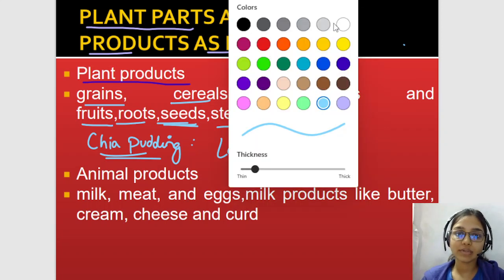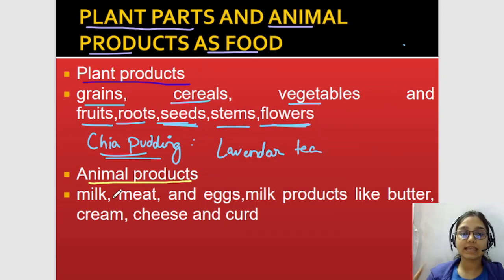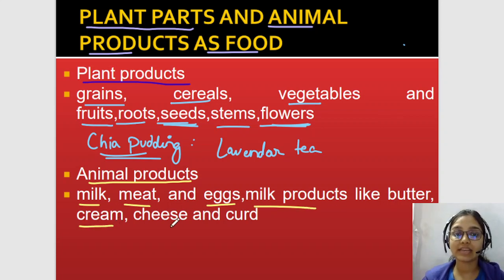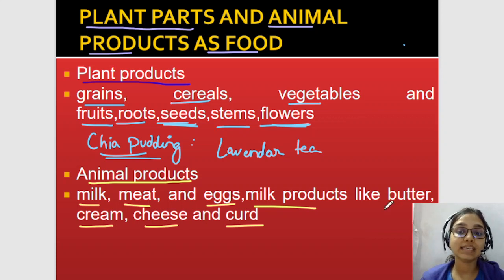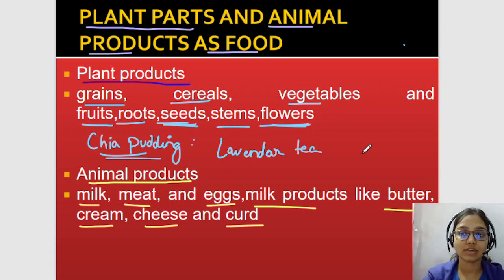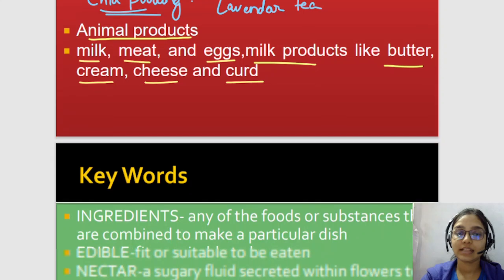Now let's talk about animal products — there are many. Milk: cow milk, goat milk, buffalo milk. Meat, chicken, and eggs. Milk products include butter, cream, cheese, curd, chena, and tofu — all of these are made from milk, so they are milk products. And milk itself is an animal product. So there are many animal products that humans consume.